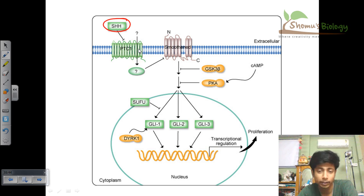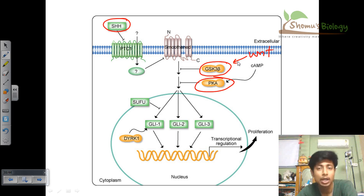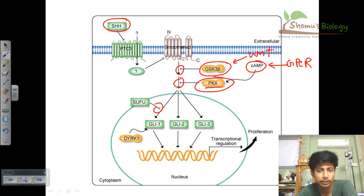GLI is not directly activated by Smoothen because there are intermediary inhibitory proteins such as GSK3-beta and PKA. GSK3-beta is also a component of the WNT signaling pathway. PKA is a protein kinase activated by cyclic AMP, which in turn is activated by GPCR signaling. In the absence of hedgehog, all these proteins act at different stages to block the expression of GLI protein.